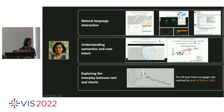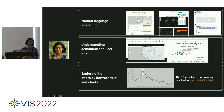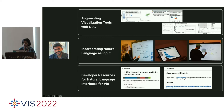A little bit of background about me: I have a background in natural language processing and graphics. Generally, my research covers three main areas — exploring interfaces where one can interact with data through natural language, understanding data semantics and user intent, and most recently, the interplay between text and charts. We also have a paper here later at the conference that Chase Stokes will be presenting. And I'll hand it off to Arjun.